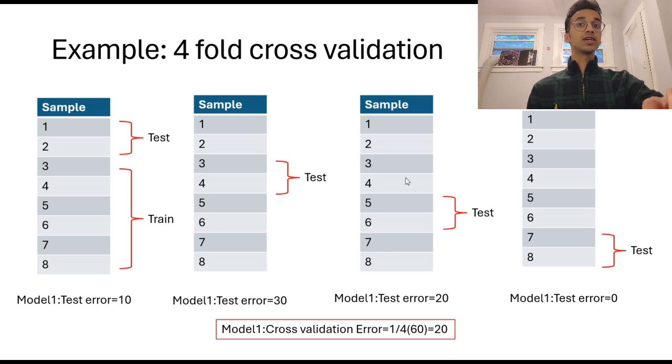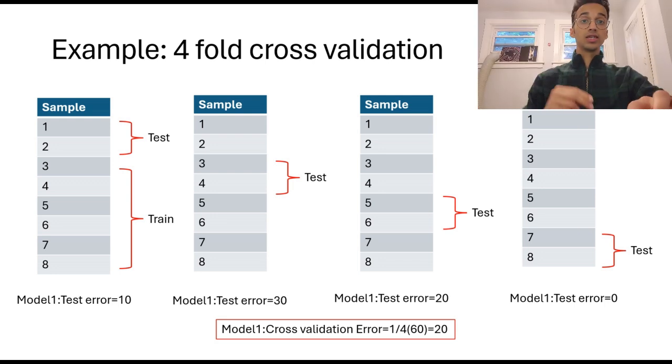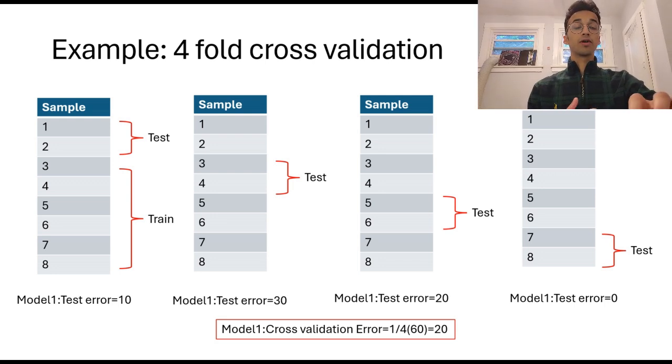Similarly you train the model by taking the third and four as testing set and rest as training so you get another error on the testing set in this scenario similarly one by one you select each of these folds so whenever you reserve a model as a test set you're going to get a test error and cross validation is simply going to take an average of this error across all the folds and this is what we call as the cross validation error in this case you can see the model one cross validation error would be one by four into 60 which gives you 20 as the cross validation error so this process is repeated for all of the models that you're deciding from.